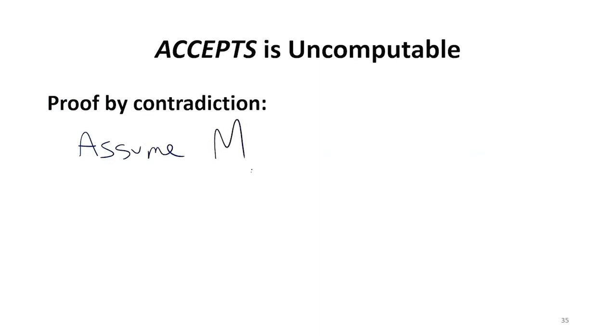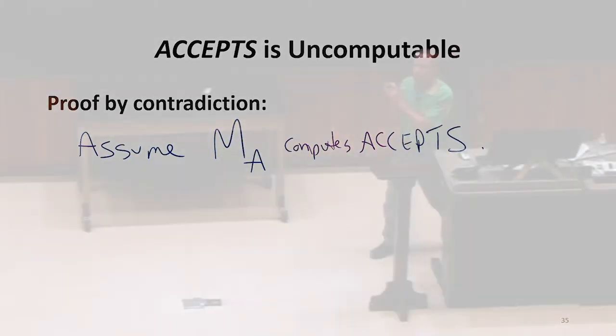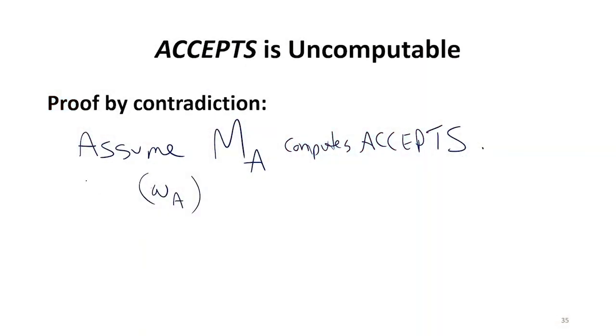And we can give that machine a name. If there's a machine that computes accepts, that means there must be some string that describes it. There's some string that describes it. That WA must exist. That's not a contradiction yet.